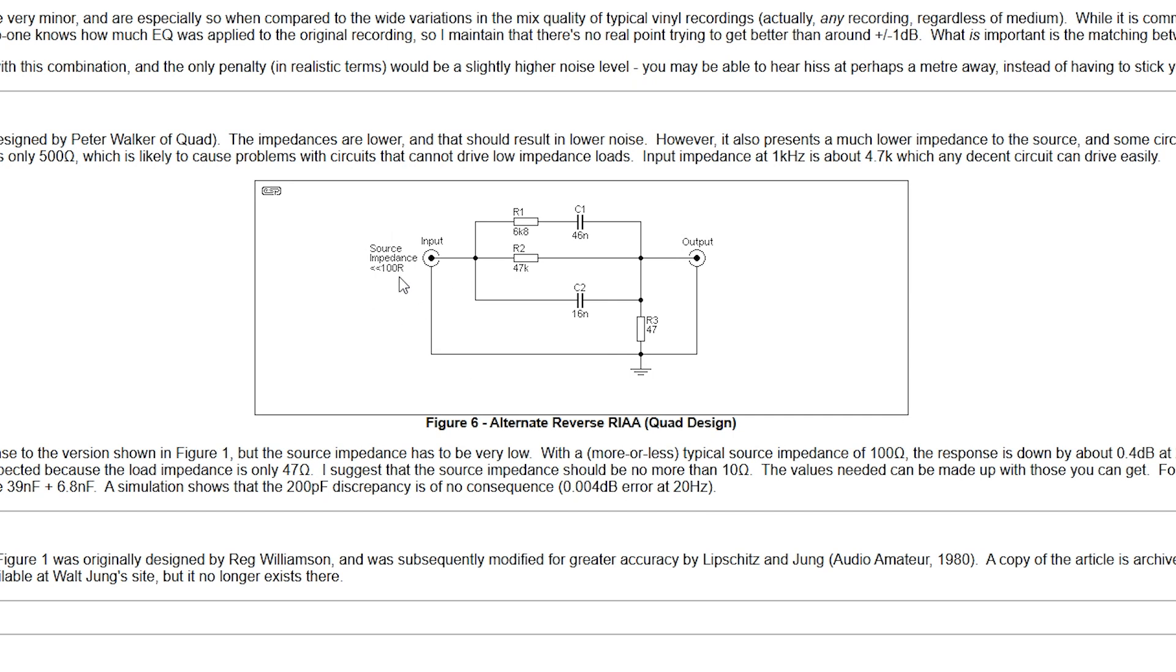What is a reverse RIAA filter, I hear you say? Well, basically, it's the same: when you go to record a record, you're cutting the bass and boosting the treble, and that's exactly what this particular circuit here does. It's on Rod Elliott's ESP website, and the link is in the description. His implementation requires the source impedance to be less than 100 ohm. I'm going to be using a function generator, so it may cause issues, but that remains to be seen.